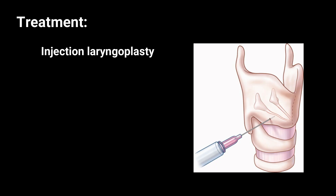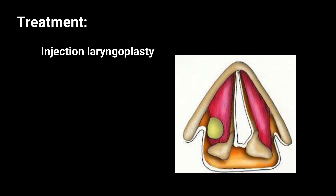The techniques to improve phonatory gap include injection laryngoplasty, laryngeal framework surgery, and laryngeal re-innervation procedure. Vocal cord augmentation by injection laryngoplasty is a simple and short procedure. Various substances are available for this procedure, such as fat, teflon, collagen, etc.